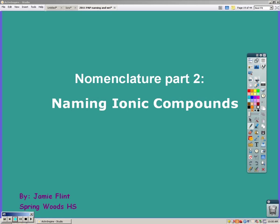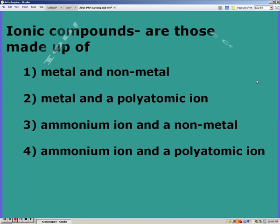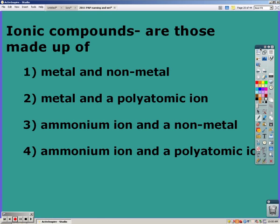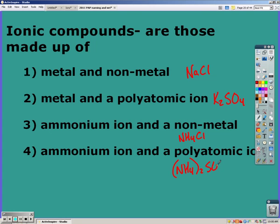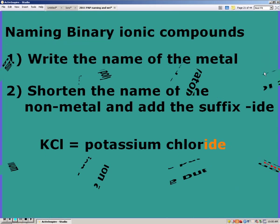Part 2: naming ionic compounds. Ionic compounds can be made up of a metal and a non-metal, such as sodium chloride. It can be a metal and a polyatomic ion, such as potassium and sulfate. It can be made up of ammonium and a non-metal, such as ammonium chloride, or ammonium and a polyatomic ion, such as ammonium and sulfate. All ionic compounds are positively and negatively charged ions put together.